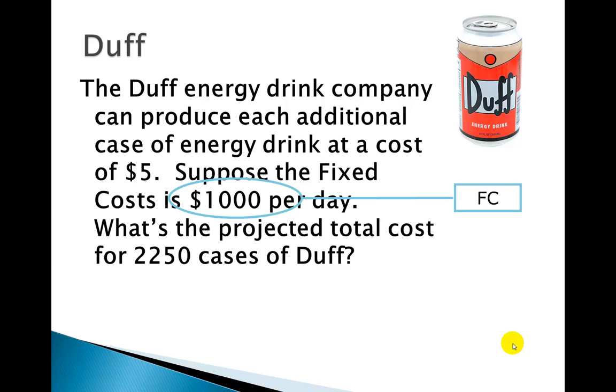So what do we have? We have a fixed cost. Our FC is going to be a thousand. Our marginal cost is five dollars because it's five dollars per case. So that's that per word is a great indicator of marginal cost. So whenever you can translate something as five dollars per day, you've got a marginal cost. And then our quantity, our Q is going to be 2,250.